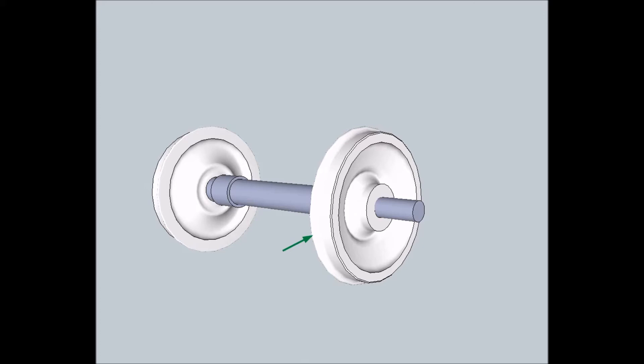That's the first component of wheel, it is wheel flange that prevent wheel from derailing from rails.